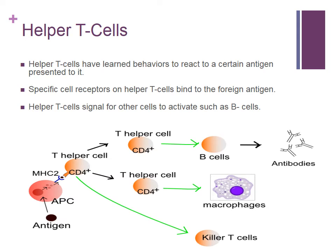Once the allergen is presented to the helper T cells, it can trigger two different responses depending on whether it is the primary or secondary exposure. In the first exposure, it will trigger memory T cells, which speed up the immune response in future reactions and subsequent exposures to the specific allergen. In the secondary response, memory T cells are also produced; however, an allergic response is triggered when previously created memory T cells recognize the foreign allergen. At this point, the helper T cells signal for activation of other leukocytes.